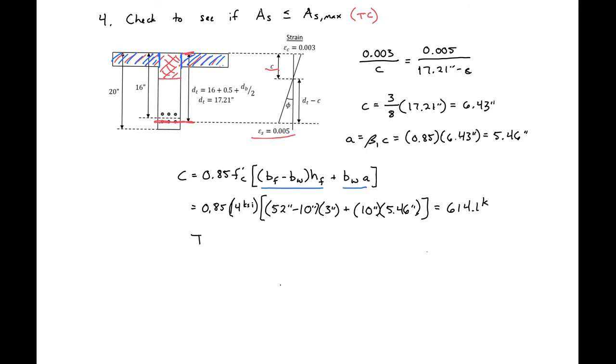We can then set T equal to our compression force. We know our T is equal to As max times Fy, equal to our compression force. And then we can solve for our As max. As max equal to 614.1 kip, divided by 60 KSI steel, which will give us an As max of 10.24 square inches. So we can check this As max versus our As provided to see if we're still tension controlled in our section. And in this example, we indeed are still tension controlled.